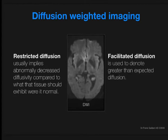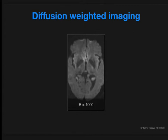A somewhat less frequently used term is facilitated diffusion, which is the opposite — used to denote when water molecules can diffuse greater distances than would be expected. Generally, restricted diffusion is due to reduction in the size of the extracellular fluid compartment between cells, whereas facilitated diffusion results from widening of the extracellular fluid compartment, such as the addition of additional fluid, as is seen in vasogenic edema.